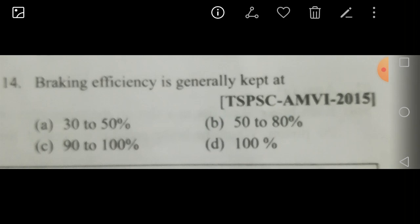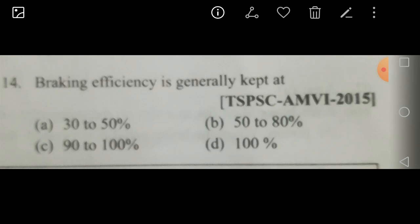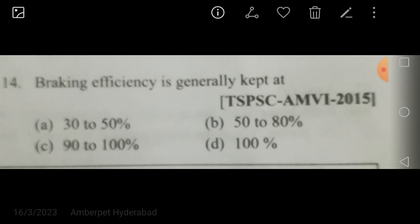The maximum retarding force applied by the brake at the wheels, F, depends on the coefficient of friction between the road and the tire surface, mu. The weight of the vehicle on the wheels is W. Since mu equals F divided by R, and the reaction equals the weight of the vehicle — W acts downward and the road surface exerts an equal and opposite force — R equals W.